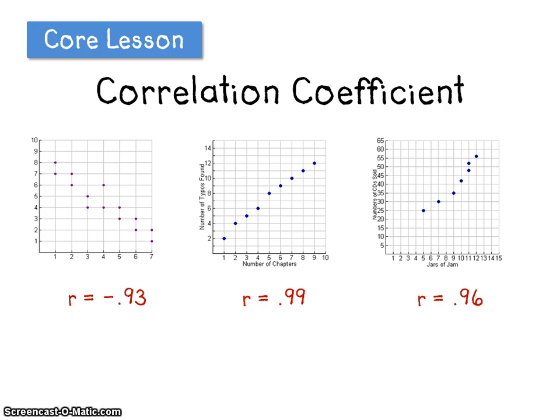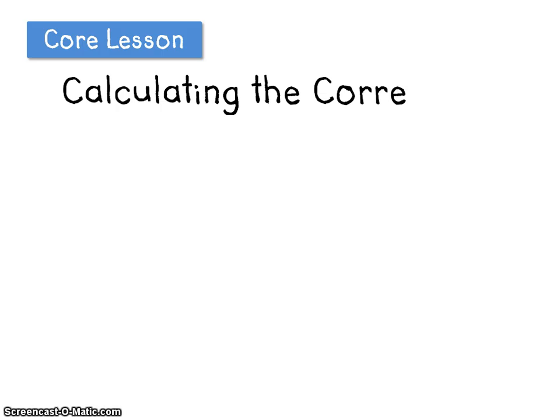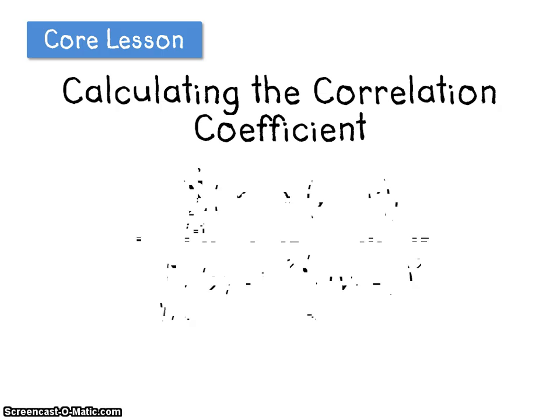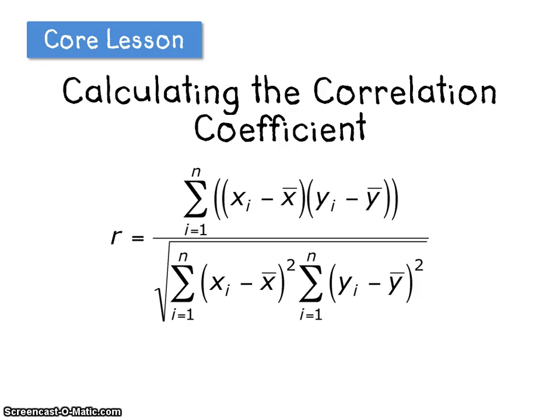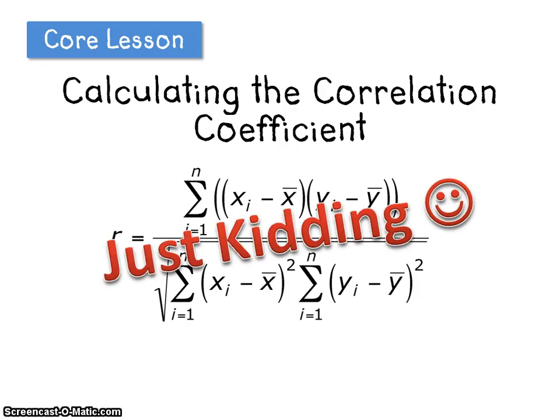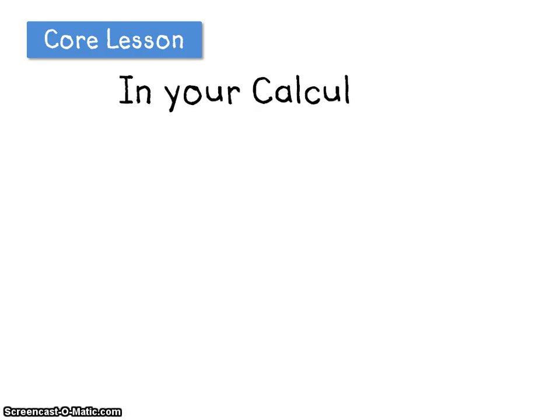So how did I calculate these three values of R? Let's talk about calculating the correlation coefficient. I had to use this formula. R is equal to the sum of... Just kidding! We don't have to use that formula. Let's use our calculator.